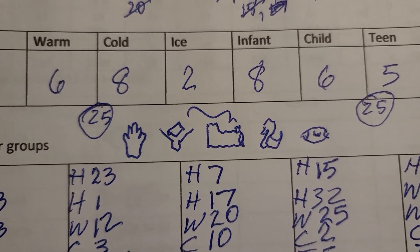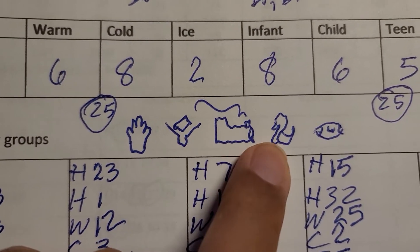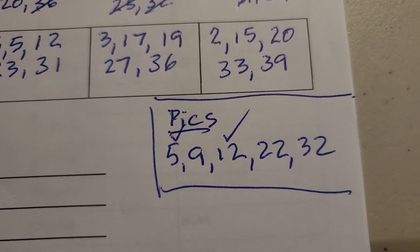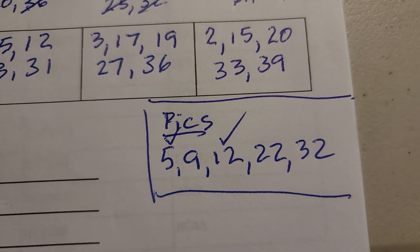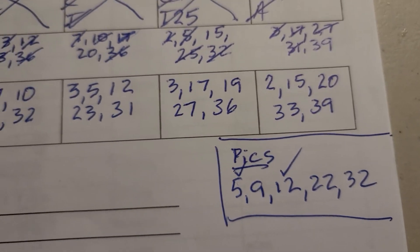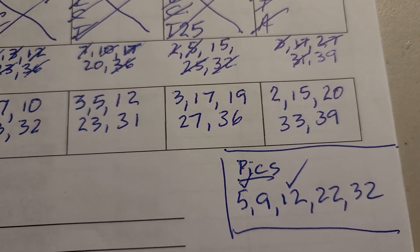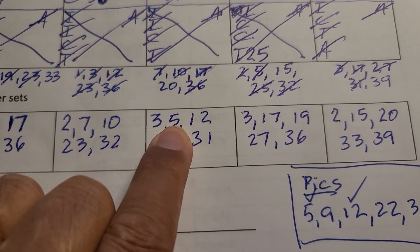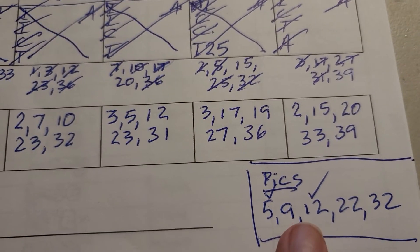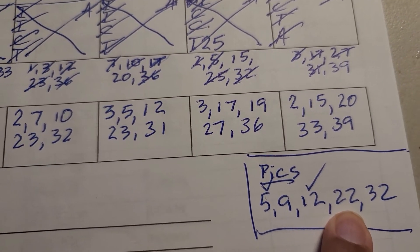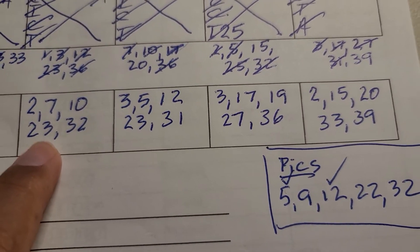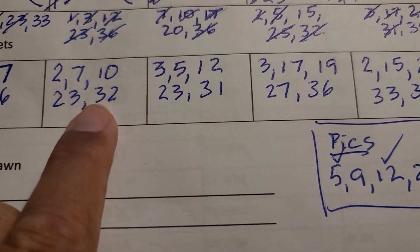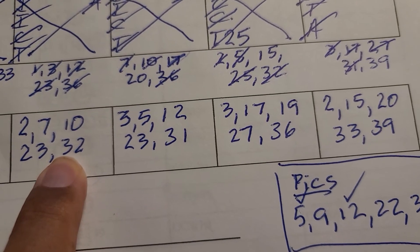I also remote viewed the number sets. My remote viewing symbols gave me: 5, 9, 12, 22, and 32. Interestingly, I have 5 and 12 right here in my sets. The 9 is a one-off from my 10, and 22 is a one-off from my 23. And 32 is actually a direct hit — it's also a one-off from my 31. So I got three numbers confirmed.